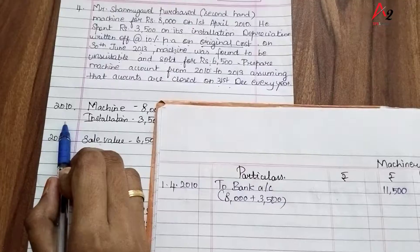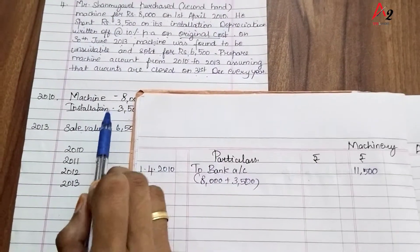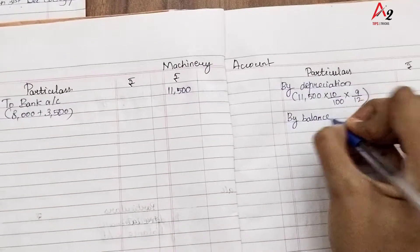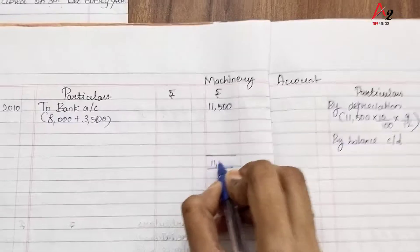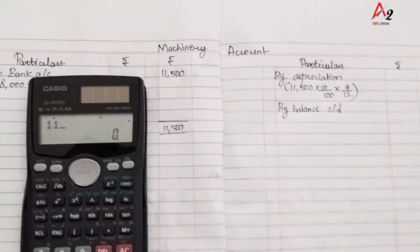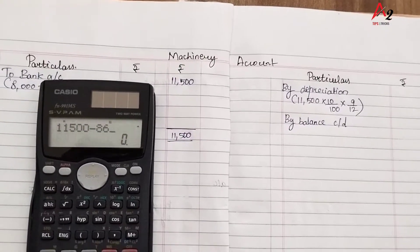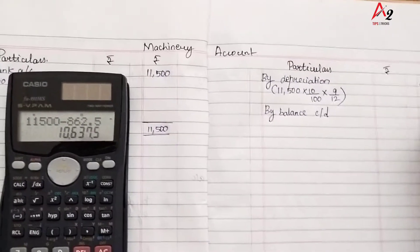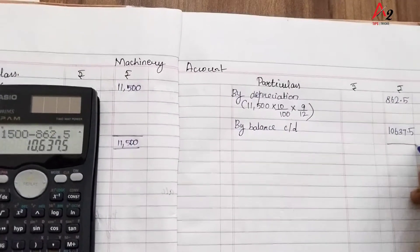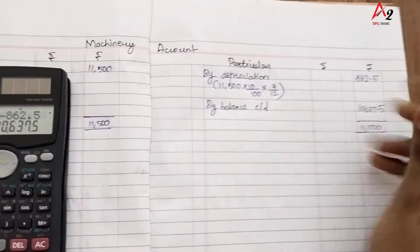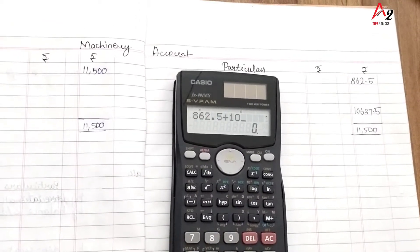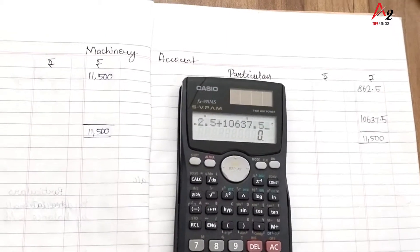Next, by balance carried down. In 2010, only the machine purchase and installation transactions occurred. Balance carried down: 11,500 minus 862.5 equals 10,637.5. To verify: 862.5 plus 10,637.5 equals 11,500. That checks out.